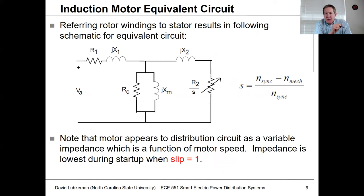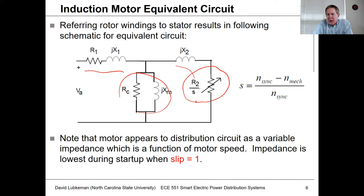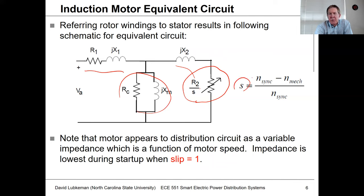The model for this machine is very similar to a transformer. We've got a model for the stator, a model for the rotor, a model for the magnetizing reactance X_M, and a model for core loss. What's different in this case is that the resistive part of the circuit on the rotor side is given by R2 over S. This represents the amount of power going to the mechanical load hooked up to the motor. Normally in steady state, slip is about 0.03, making this resistance rather large and dominating the whole impedance.